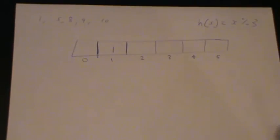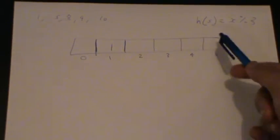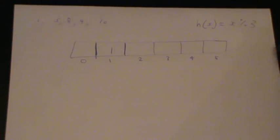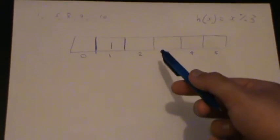Now let's say we want to insert 5, so h of 5, that gives us 5 mod 3, which is 2, so that means we insert it in that index.